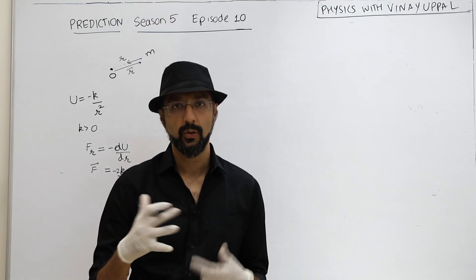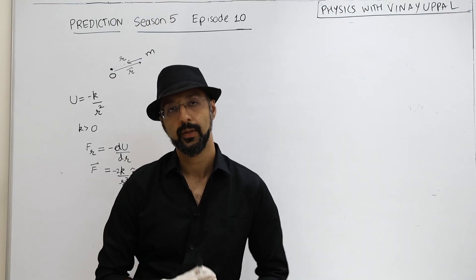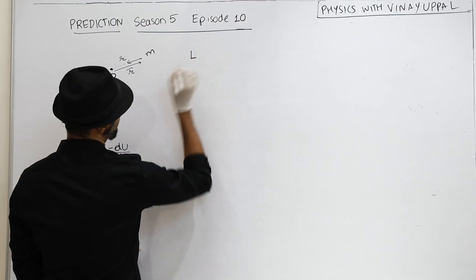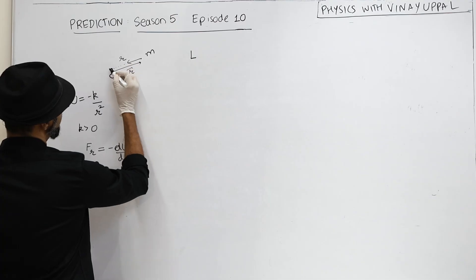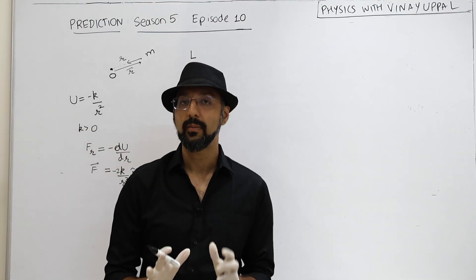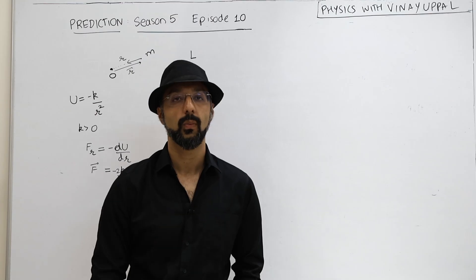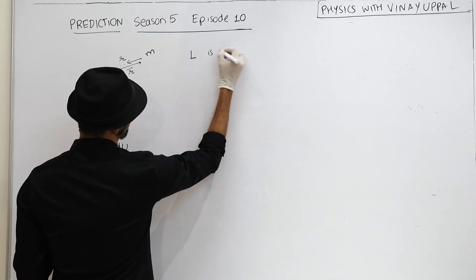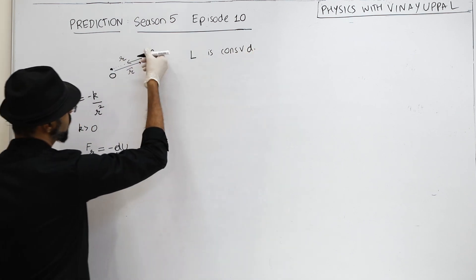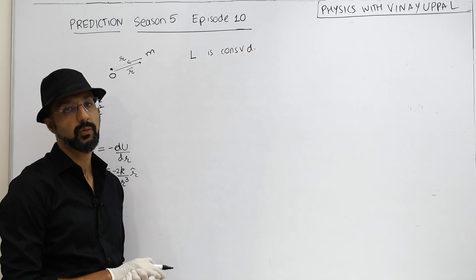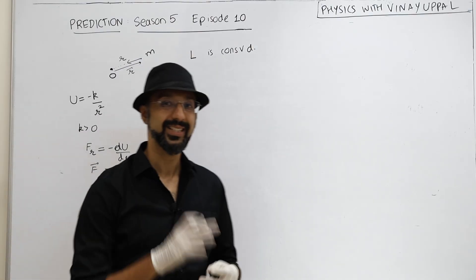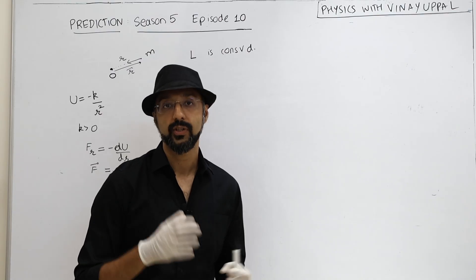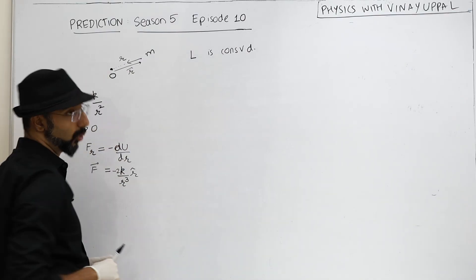This particle is performing some kind of motion. We don't know the shape of the trajectory. The question asks: what should be the maximum value of angular momentum such that the particle is able to reach the origin? The angular momentum is constant because it is a central force — torque about point O is zero, since the force always passes through point O. So angular momentum is conserved, and we want its maximum possible value that still allows the particle to reach the origin.